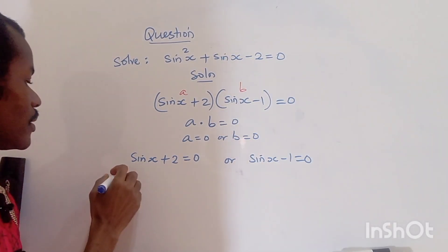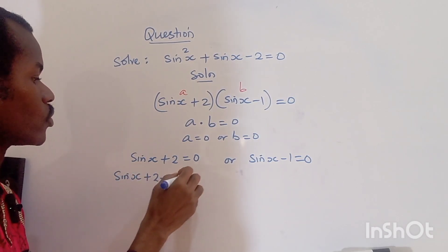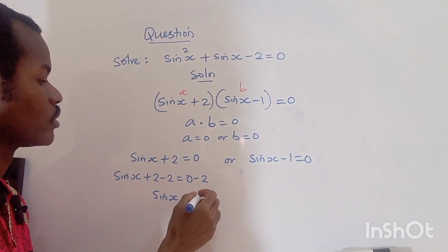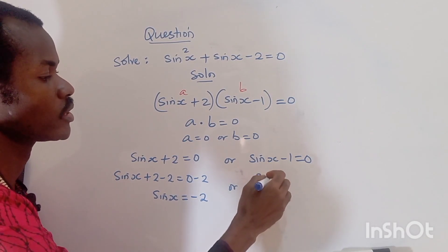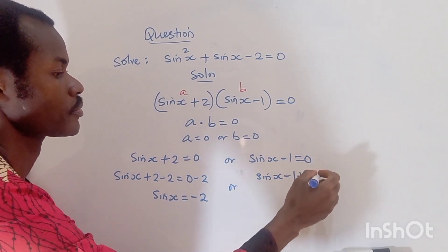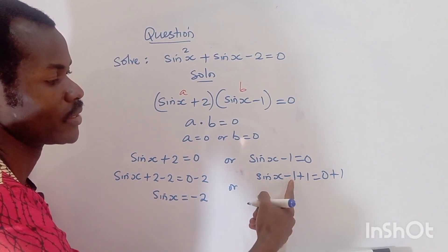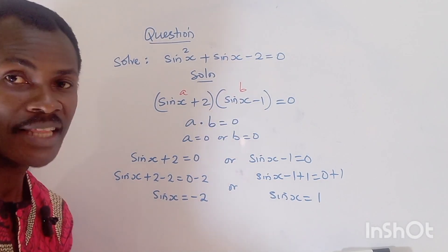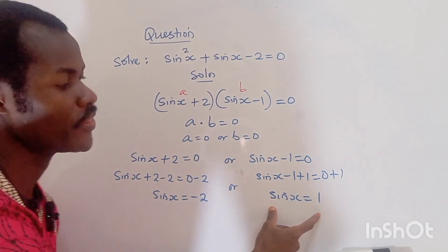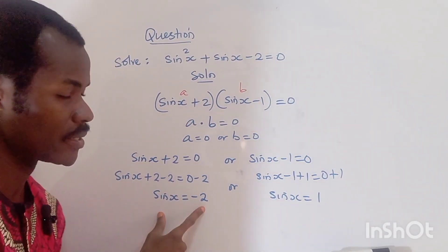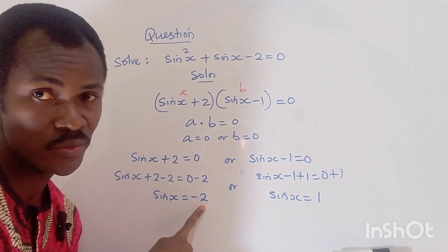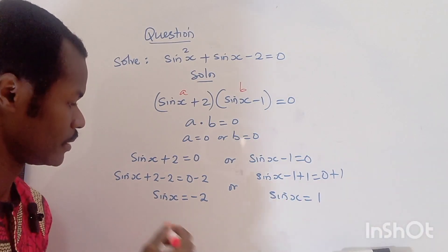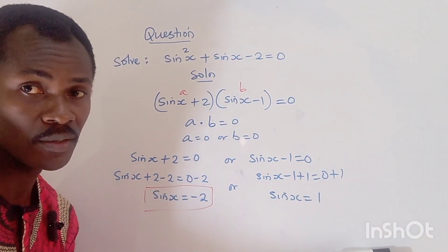For the first: subtract two from both sides — sine x equals minus two. For the second: add one to both sides — sine x equals one. At this point, sine x equals minus two is inadmissible because sine cannot equal a value outside the range negative one to one, so we cannot use it to find x.